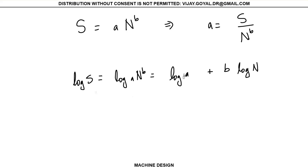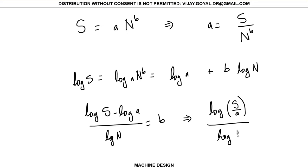And then I can subtract this. This is log S minus log a divided by log N equals b, or simply this is going to equal log S divided by log N. That would be b. So if you knew your a, you can find your b like this.